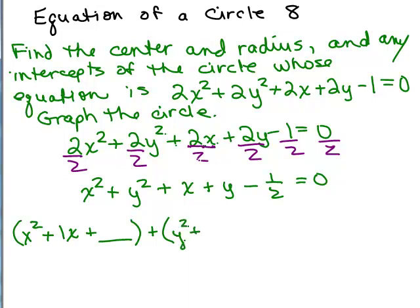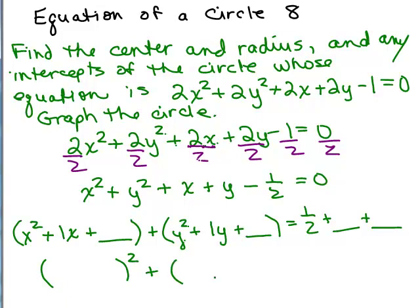We'll do the same thing for the y squared and y terms, writing it as plus 1y, and add something there too. We'll put the constant one half on the other side and add two numbers — whatever we add in the first parentheses and whatever we add in the second parentheses. To complete the square, we take half the coefficient of x, which is half of 1 equals one half, then square it to get one fourth, since one half times one half is one fourth.